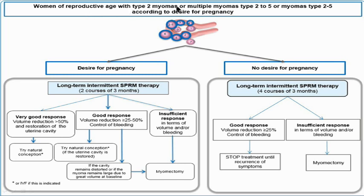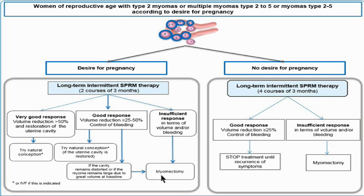For reproductive age group with type 2 to type 5 myomas who desire pregnancy, give 2 courses of 3 months of ulipristal acetate or SPRMs. If there is a very good response — volume reduction of more than 50% and the cavity is restored to normal — she may try natural conception. If good response with 25 to 50% correction and bleeding controlled, she can also try natural conception. If the cavity remains distorted, hysteroscopic myomectomy can be done. If insufficient response, resort to surgical methods.